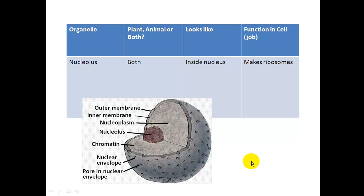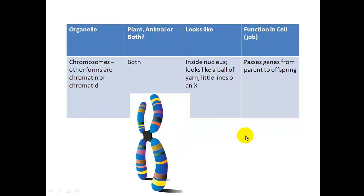Next organelle is the nucleolus. It's in the center of your nucleus. It is both plant and animal cells, but not prokaryotic cells. And its job is to make ribosomes. So this is where your ribosomes are made.